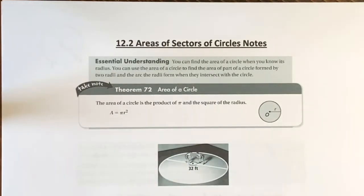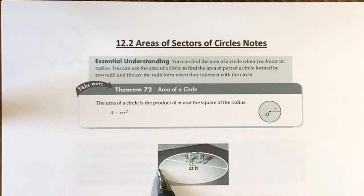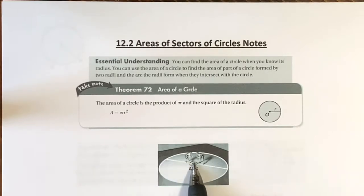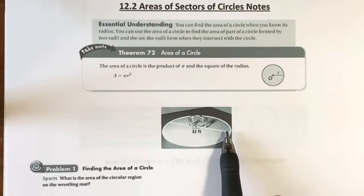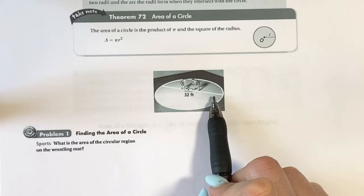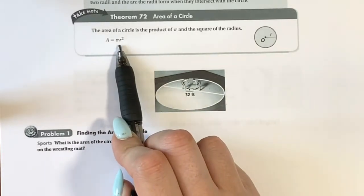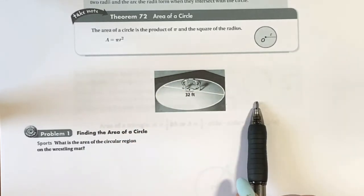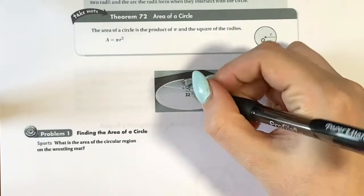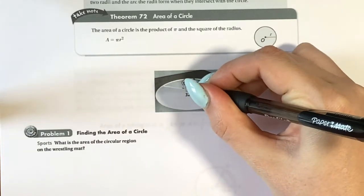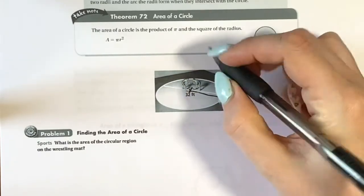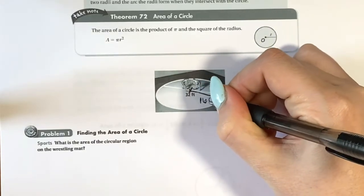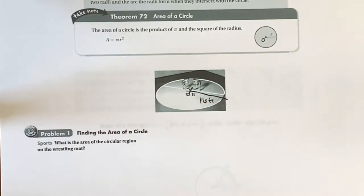So if you are given a circle like this one — it asks what is the area of the circular region of this wrestling mat — you can see that the diameter here is 32. Since our formula uses the radius, we want to get the radius from the diameter by cutting it in half. So if it's 32 feet across, half of 32 is 16, so 16 feet would be the radius.